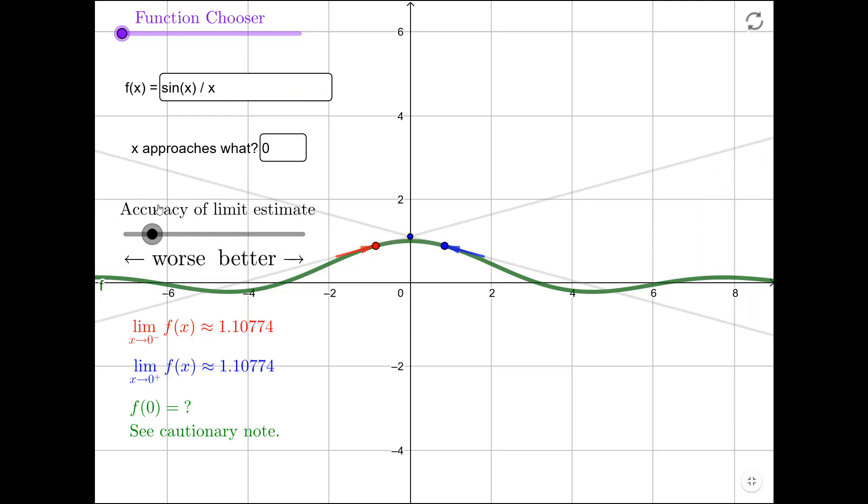However, the limit still exists. So for x values getting very close to 0, this function takes a value that is ever closer to 1. So the left-hand limit and the right-hand limit both agree. Therefore, the limit as x approaches 0 of sine of x over x is 1.